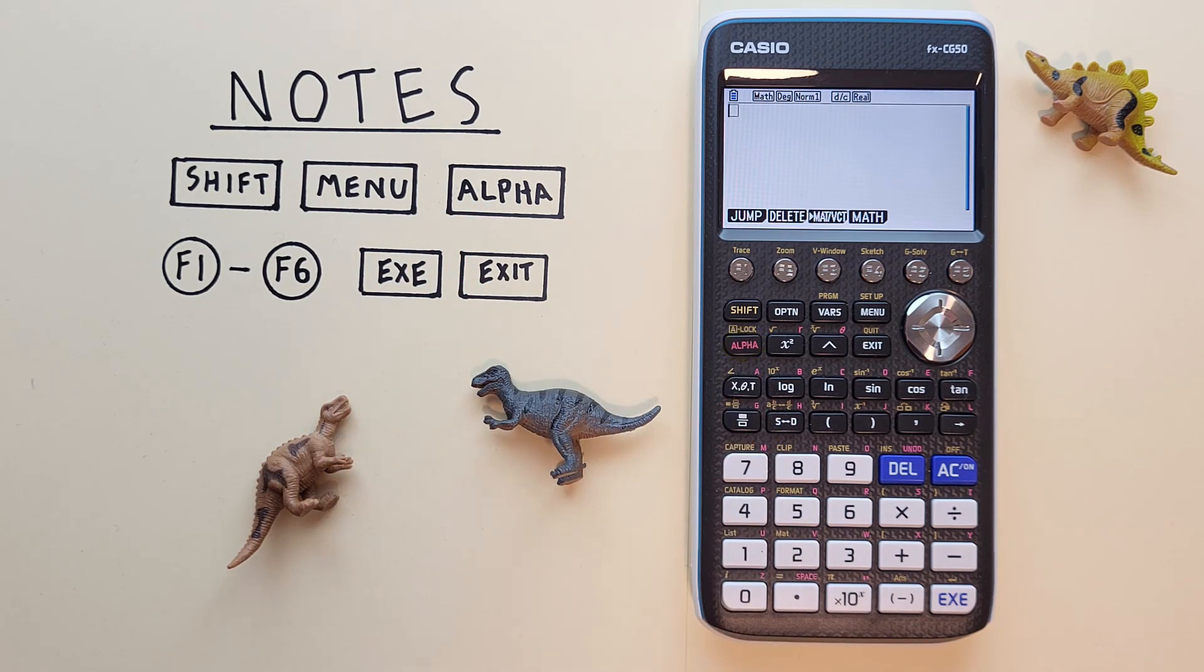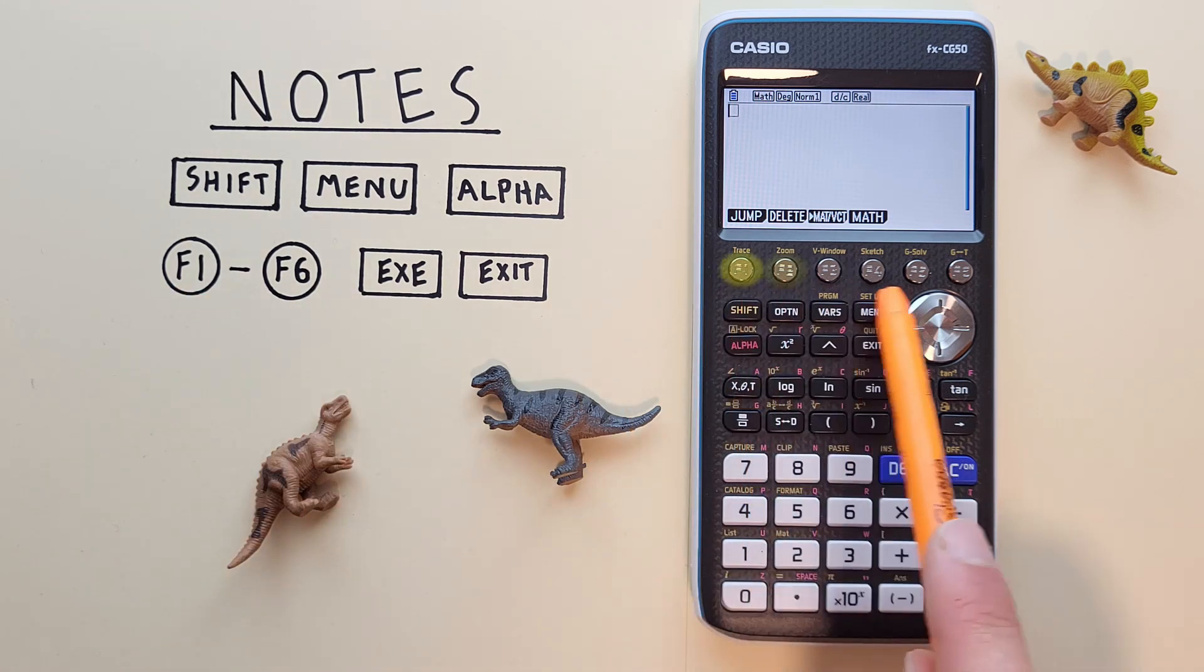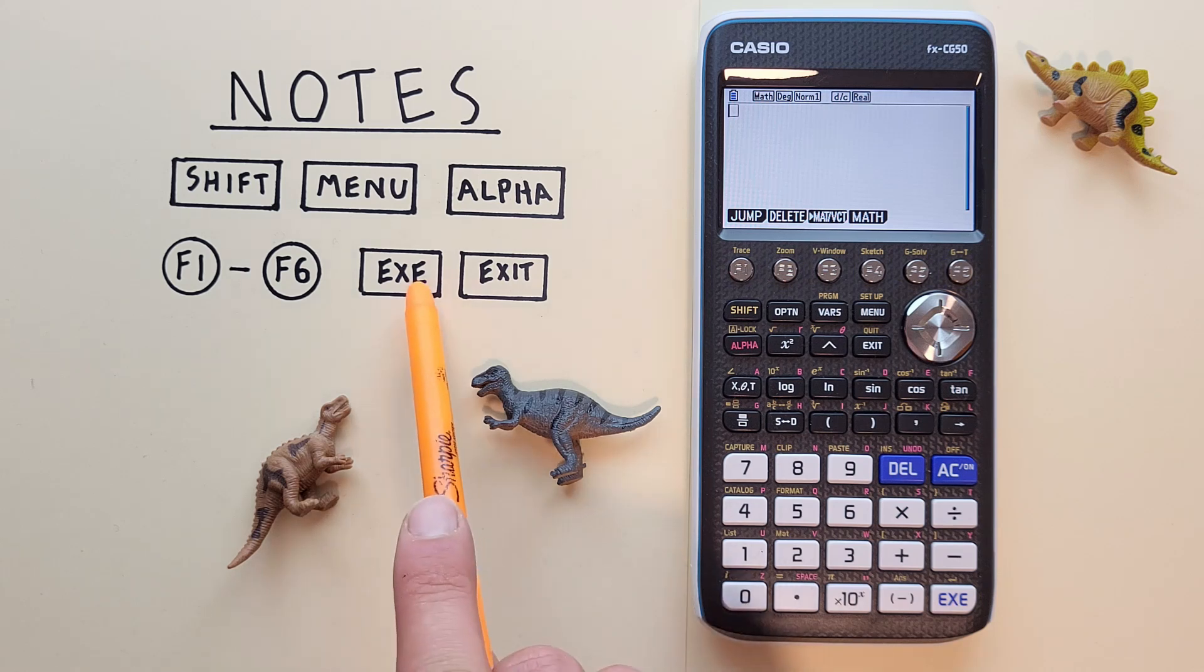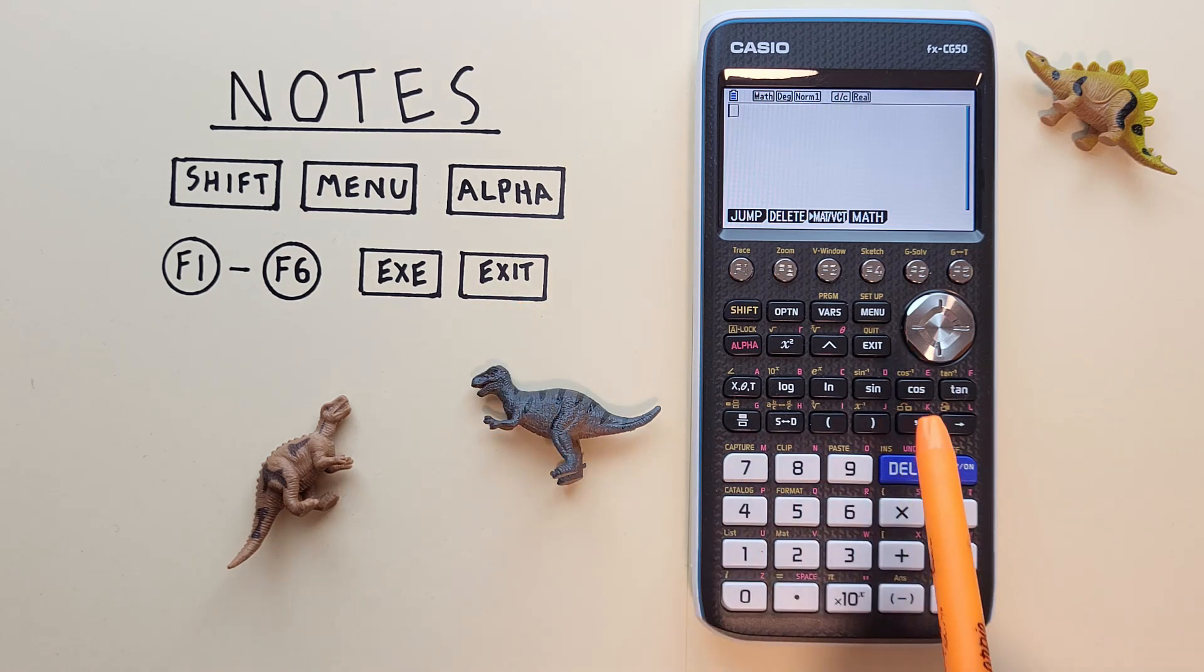The F1 through F6 keys that look like this located here, the EXE or execute key that looks like this located here, and the exit key that looks like this located here.